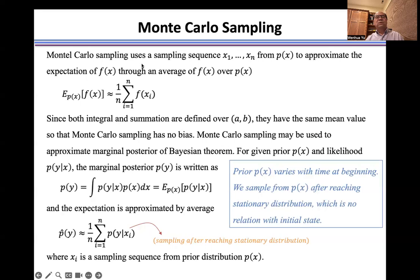Monte Carlo sampling uses a sampling sequence x1,...,xn from p(x) to approximate expectation of f(x) through an average of f(x) over p(x). Since both integral and summation are defined over (a,b), they have the same mean value, so Monte Carlo sampling has no bias.